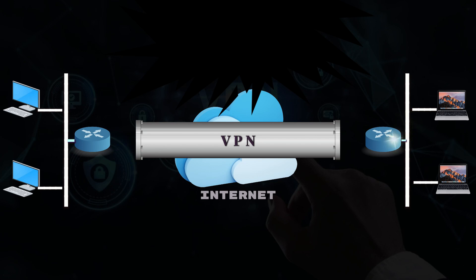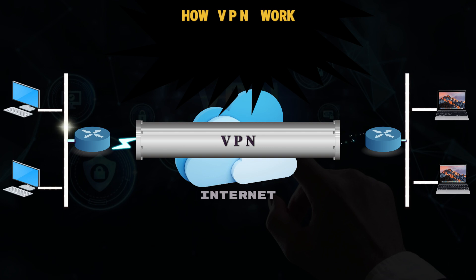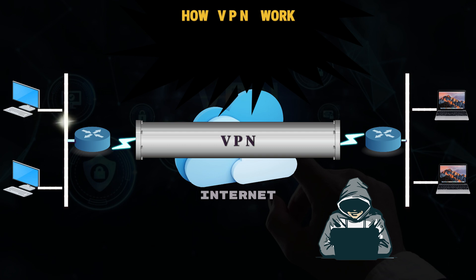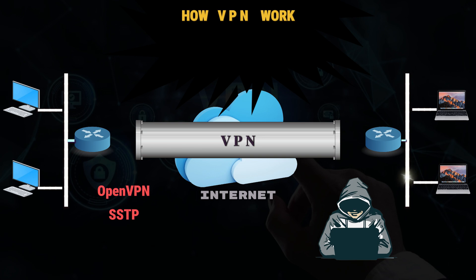How do VPNs work? VPN tunneling creates a point-to-point connection that cannot be accessed by unauthorized users. To create the tunnel, a tunneling protocol is used over existing networks. Different VPNs will use different tunneling protocols, such as OpenVPN or Secure Socket Tunneling Protocol.